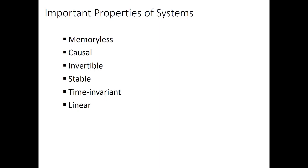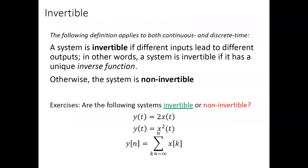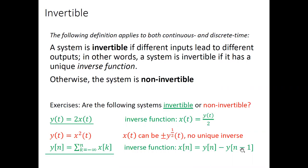For the third property, invertibility of a system, it really depends on whether we can find an inverse function between the input signal x and the output signal y — referring to the function relationship between x and y, not between x and t or y and t. This inverse function does not have to be x(t) as a function of y(t); it can also be x(n) as a function of y at not only time n but also some other times. It's a function relationship between the entire signal x over time and the entire signal y over time.